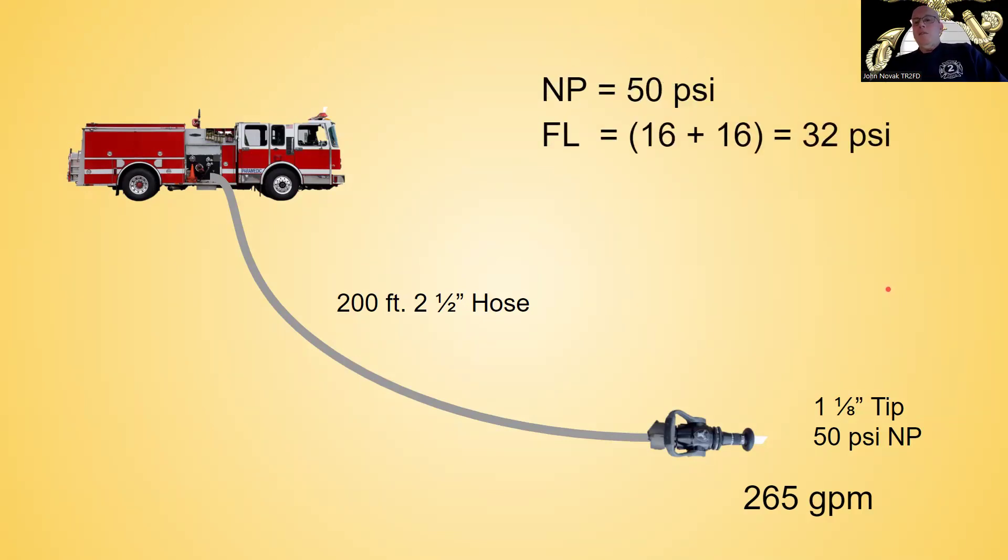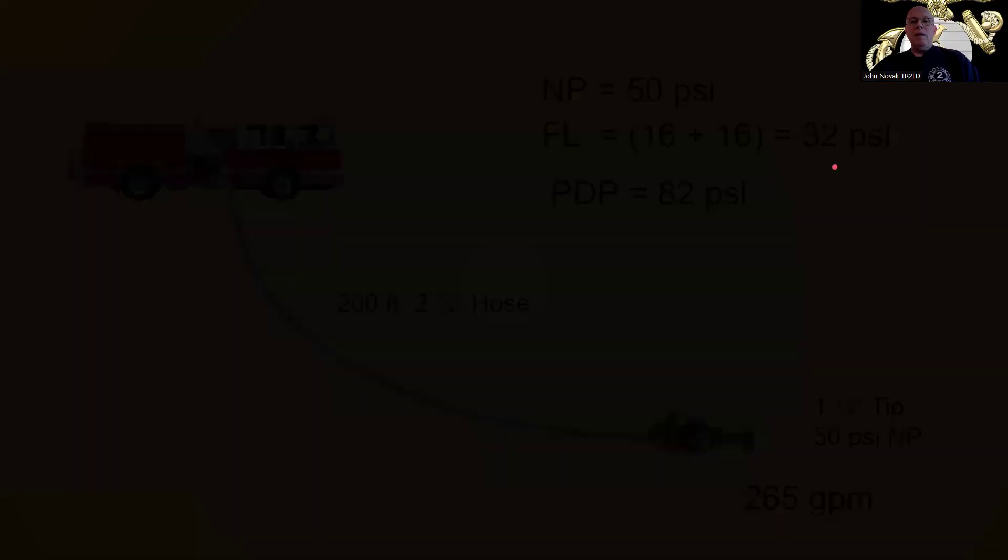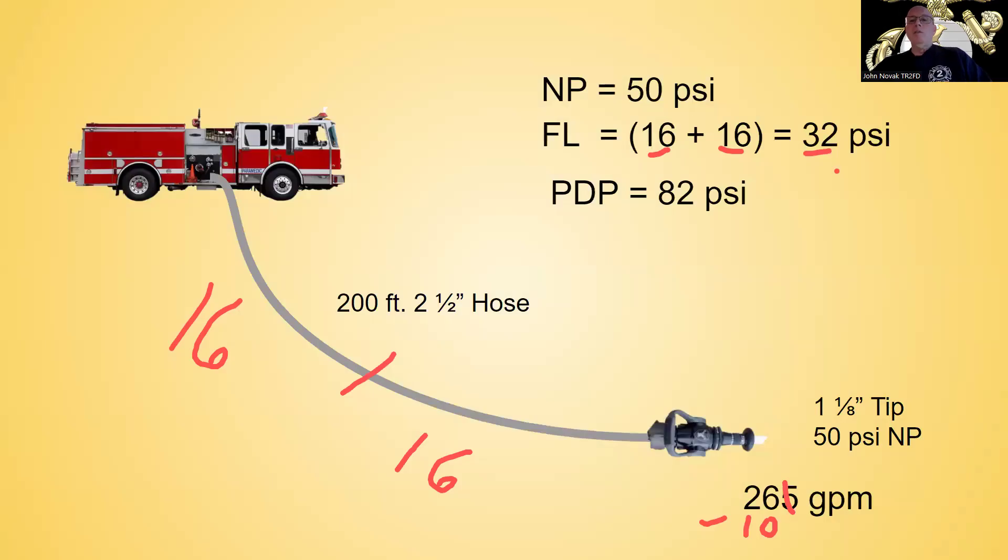So my nozzle pressure is 50. So going by my drop 10 method, I'm going to take 265. And we're going to get rid of this last number, and we're going to subtract 10. That leaves me with 16. So there's two lengths, so there's 100 feet here, so that's 16 psi loss here, 16 psi loss here. 16 plus 16 equals 32. So my friction loss is going to be 32. I add in my 50 pounds nozzle pressure, and I end up with my pump discharge pressure, 82 psi.